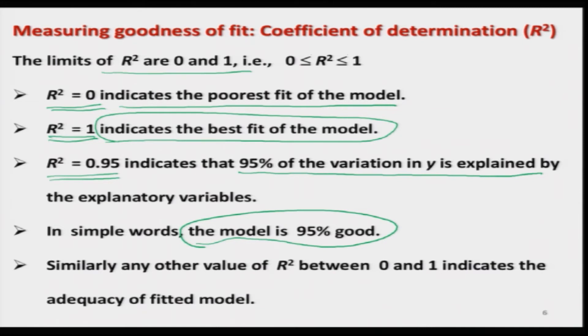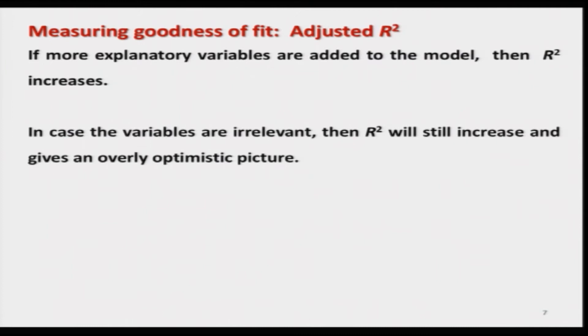That indicates the success of the choice of your explanatory variables. If your explanatory variables are good and relevant, your R² is going to be higher — garbage in, garbage out. If you try to take any other value of R² between 0 and 1, that will indicate the adequacy of the fitted model. Before going further, let me address a few things. We have assumed that whenever you use R², the model should have an intercept term — now the question is why.